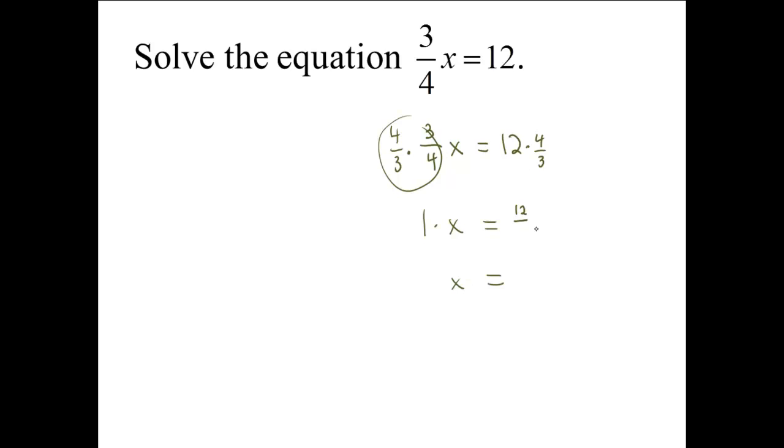12 is a whole number, so we can write 12 divided by 1 times 4 thirds. The rule for multiplying fractions is to multiply through the numerators. 12 times 4, that gives us 48. We also multiply through the denominators. 1 times 3 is 3. So we have 48 divided by 3, and 3 goes into 48, 16 times.